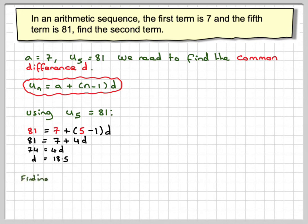Now we can find the second term by just taking the first term and adding it to the common difference. So we've got 7, which is the first term, plus the common difference, which is 18.5, which gives me 22.5.